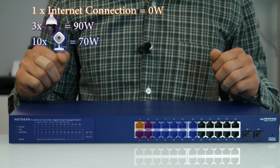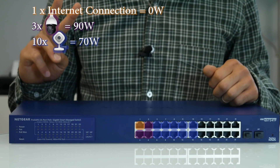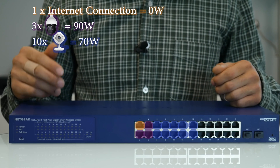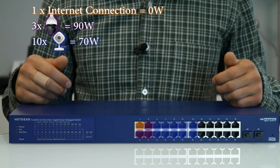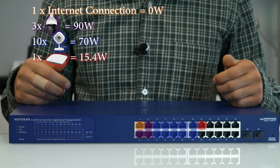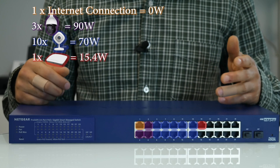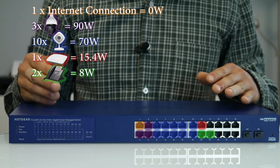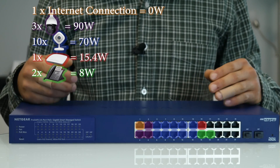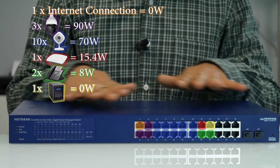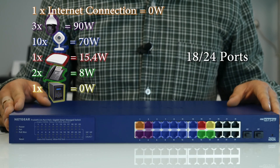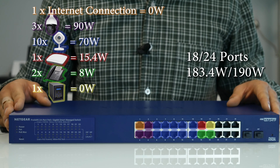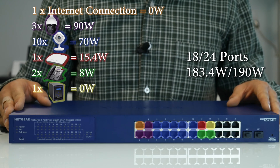Now we'll have 10 IP cameras at the much lower second class, so 10 cameras will only take up 70 watts. The building must have Wi-Fi, so we'll add an access point at 15.4 watts since it's third class, and we'll add a couple of first class IP phones for 8 watts. There are plenty of ports left and we can add some non-PoE connections as well — I'll add a ReadyNAS. With all that, we have 18 out of 24 ports being filled and 183.4 watts out of 190 watts being used.